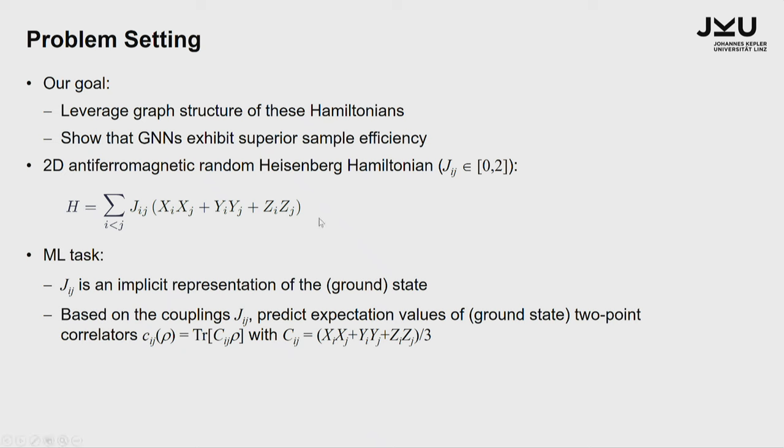You're right that the structure of the Hamiltonians is sort of a given and then the J_ij values tell you the specifics.